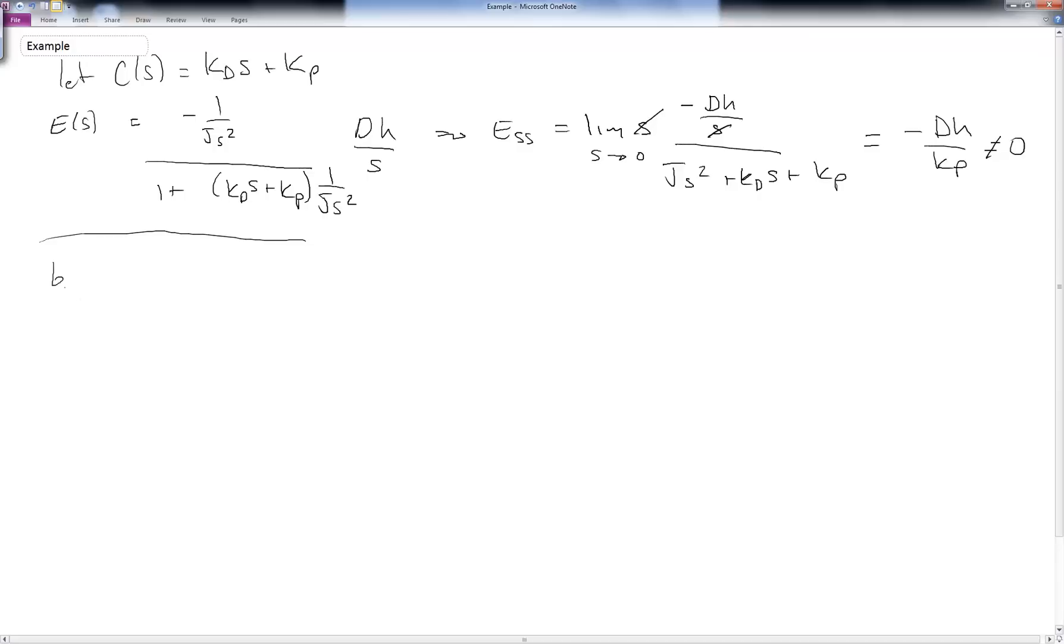So instead, let's go ahead and let our control law be given by kp plus ki over s, so that's like an integrator, plus kd times s. Now this is what's known as a PID or a PID control, proportional integral derivative. Go ahead and make the substitution.